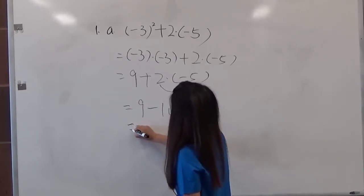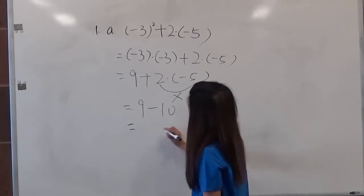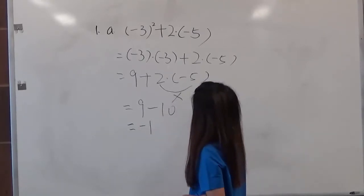So 9 minus 10. 9 minus 10 equals negative 1. And that's all. Thank you.